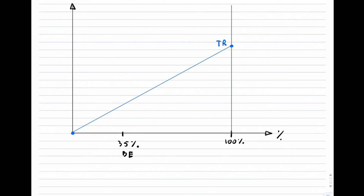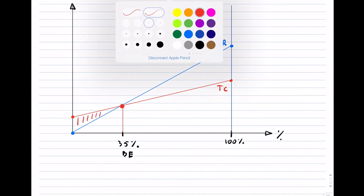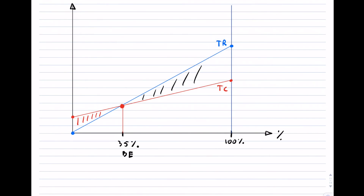Total revenue is a line growing from the origin. Fixed costs are a horizontal line, and total cost starts at the fixed cost level and increases. The intersection of total revenue and total cost is the break-even point — to the left we have a loss, and to the right of the break-even point we have a profit. Fixed costs are labeled on the y-axis, and values can be shown in dollars.